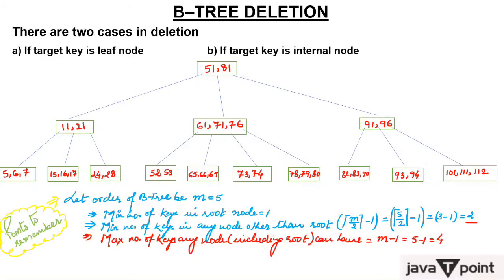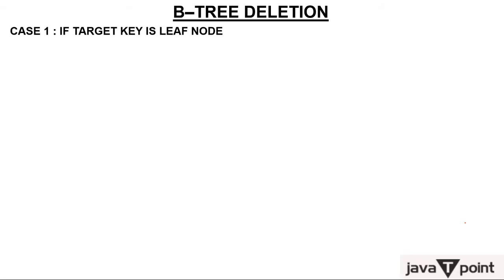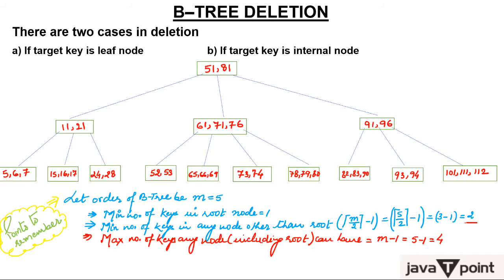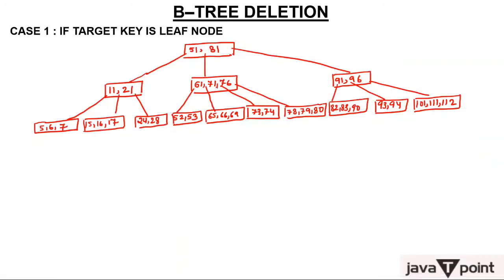Now let's take the first case: if the target key is in a leaf node. Let me draw the tree so we can start deleting. Finally we have created the tree and now we will start deleting, removing keys from leaf nodes only.